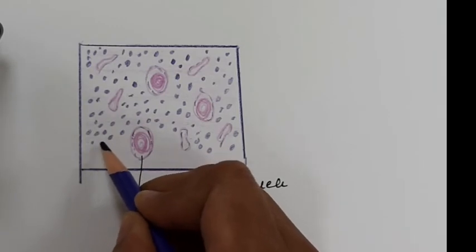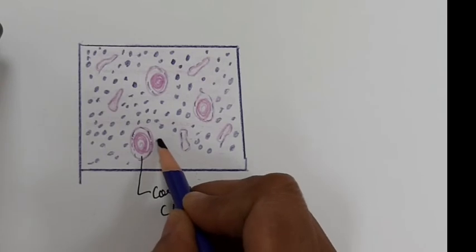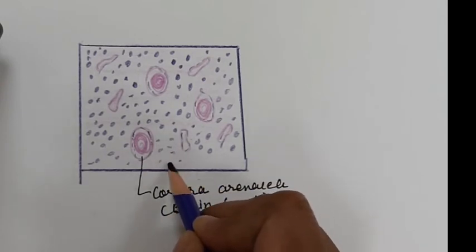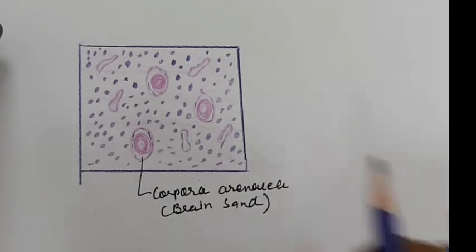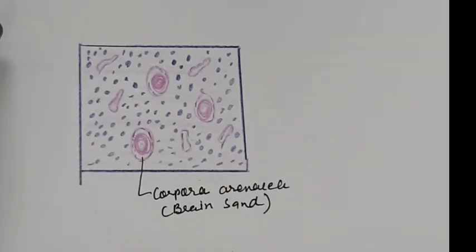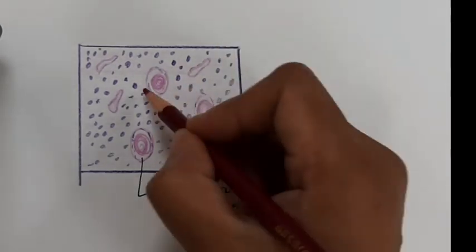The pineal gland is sensitive to light. It secretes the melatonin hormone at night. Melatonin helps hold back reproductive development until a suitable age is reached.